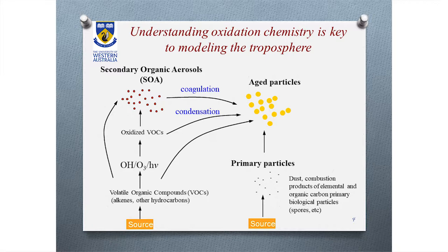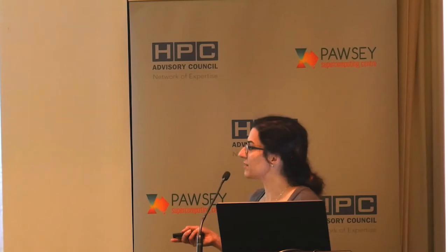Volatile organic compounds emitted as gases through biogenic processes can be oxidized through complex interactions with sunlight or other oxidants like ozone, and this leads to the formation of secondary organic aerosols, which are very important in air pollution.